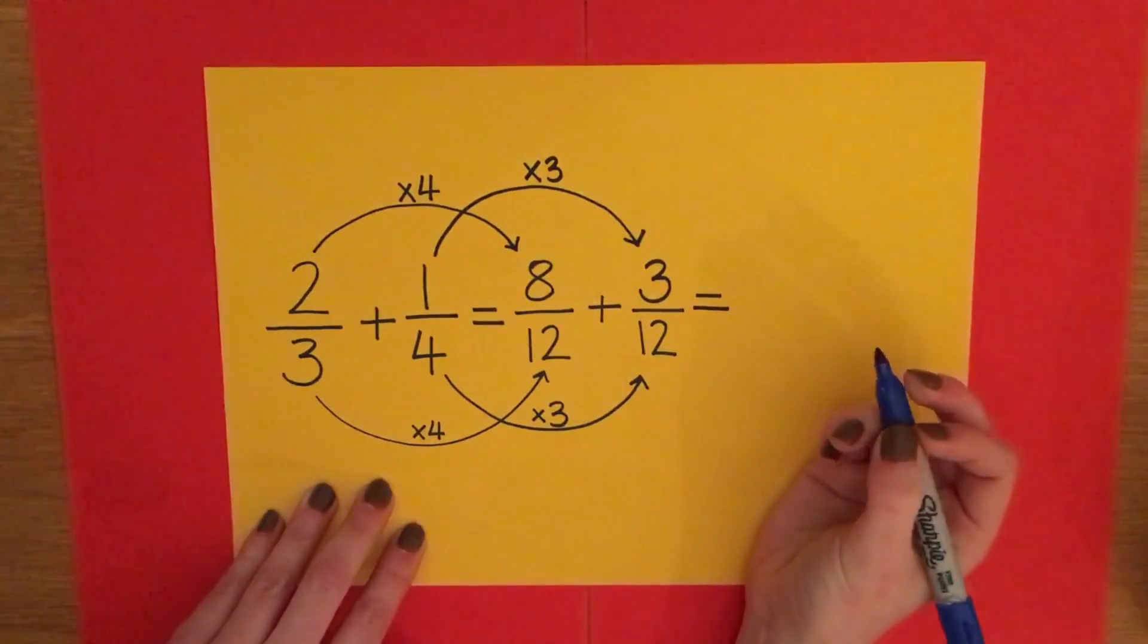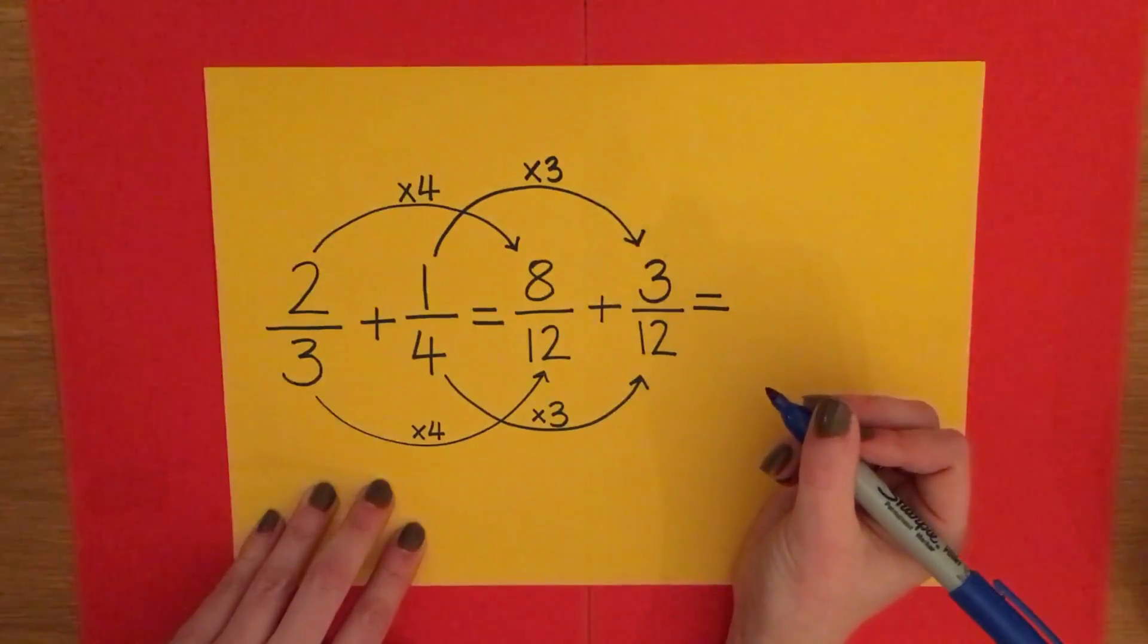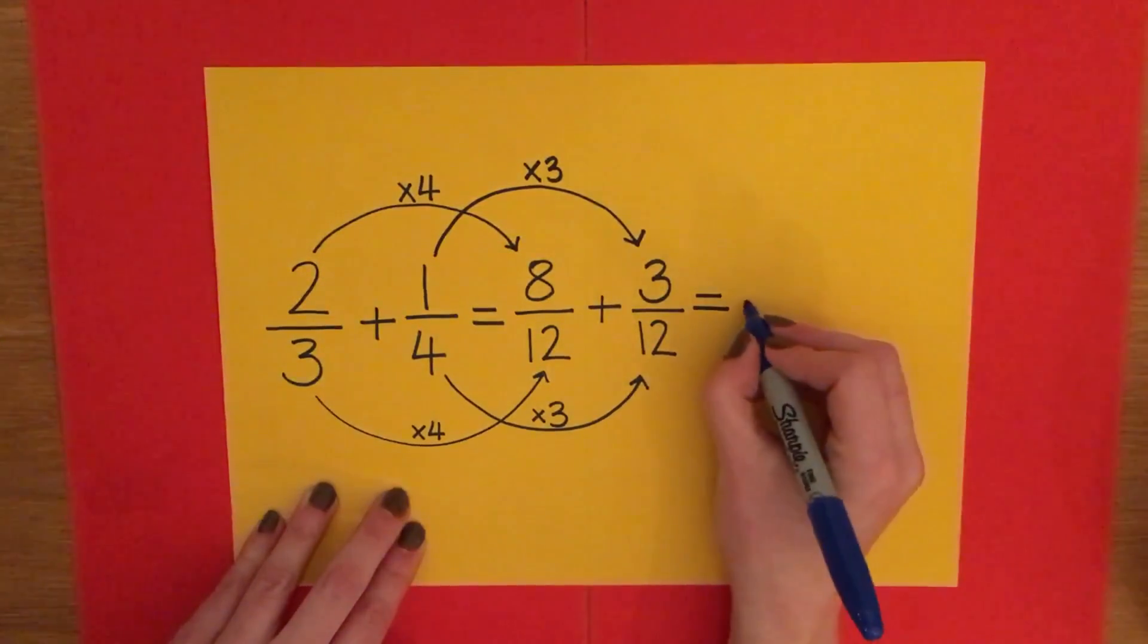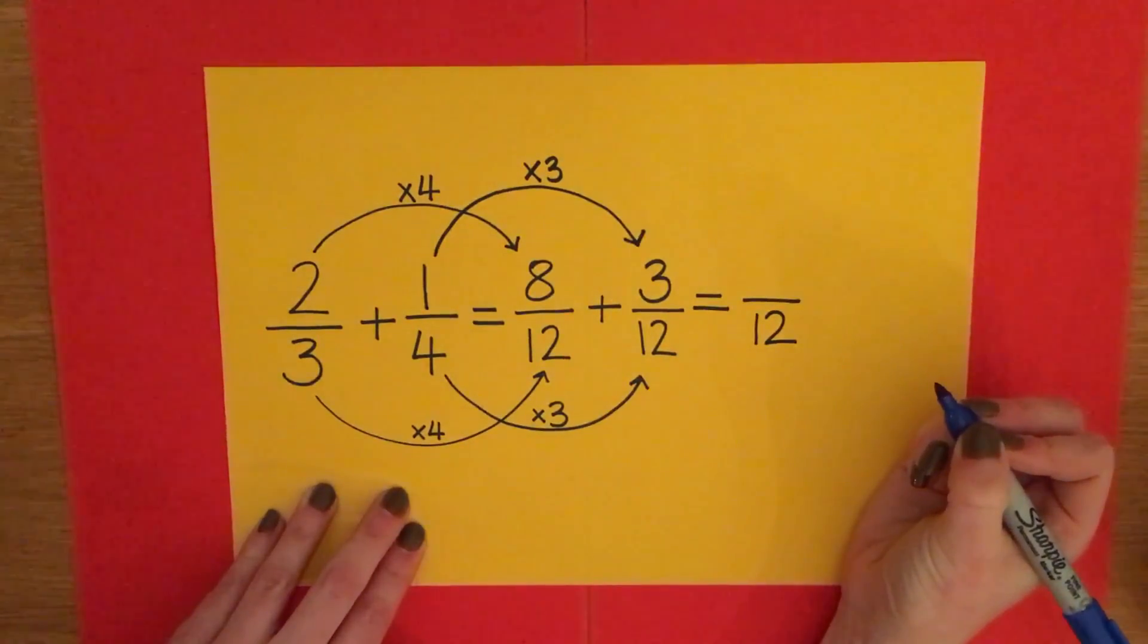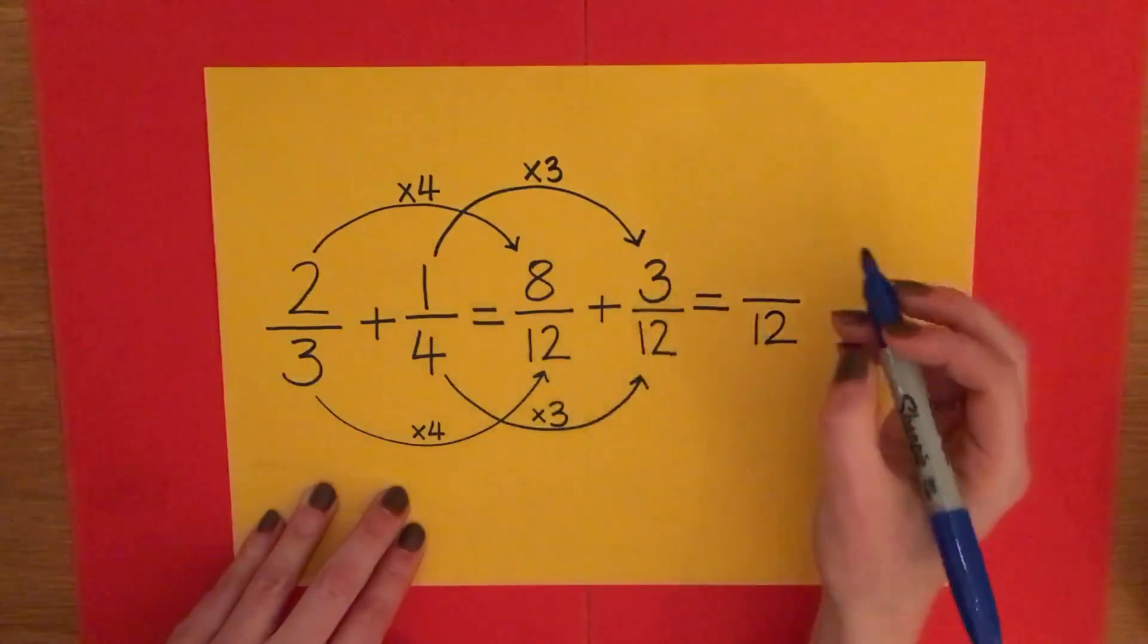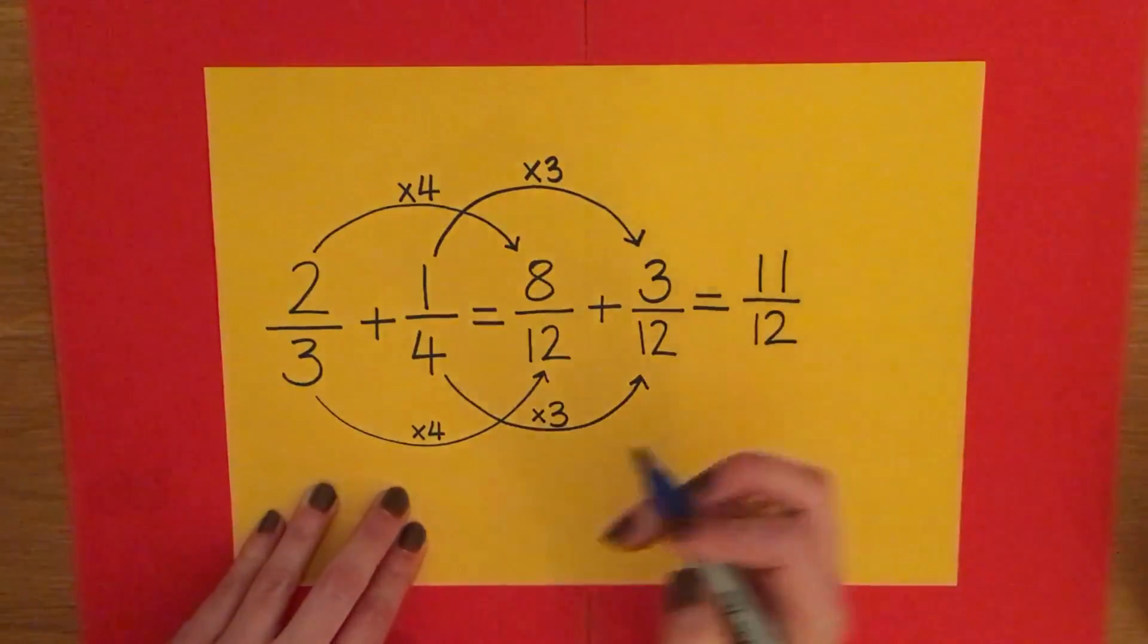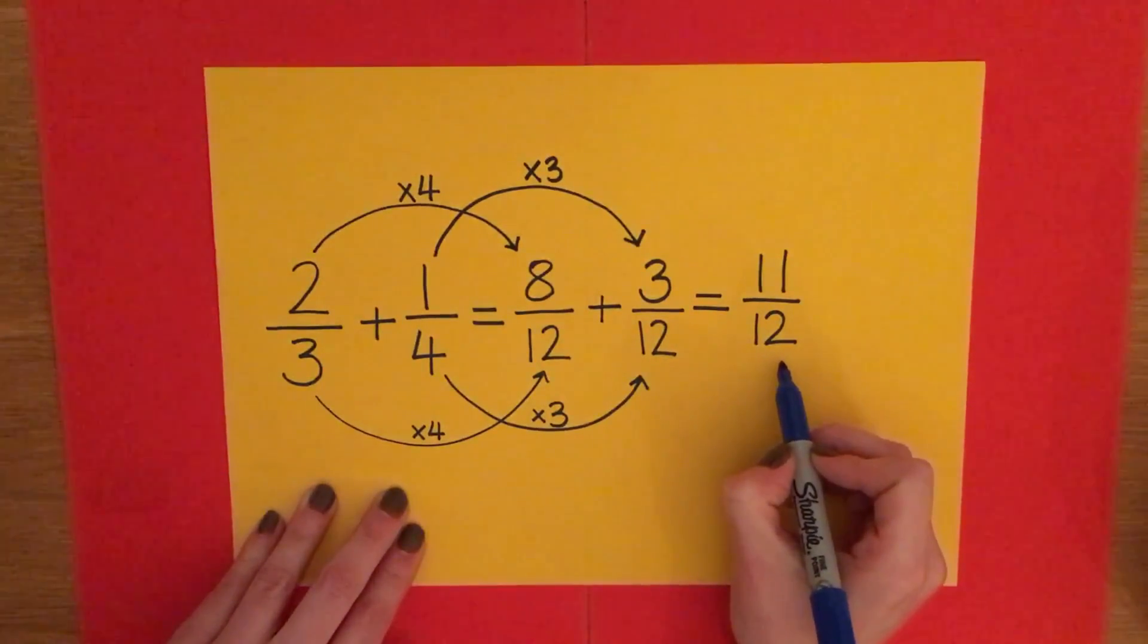And now we need to add them together. This is the really easy part. Whenever we add two fractions together with the same denominator we always keep the denominator the same and we add the numerators together. So eight add three is eleven. So your answer to the question is eleven twelfths.